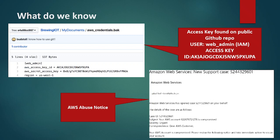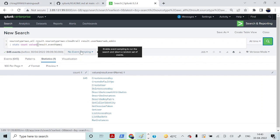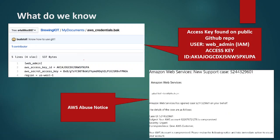I can make a note of this particular access key ID for future purposes. Also, in the slide you can see the profile — the corresponding profile with respect to the access key which has already been compromised. The user profile is 'web admin'. So I can make use of either the username 'web admin' or the access key ID which is listed here.